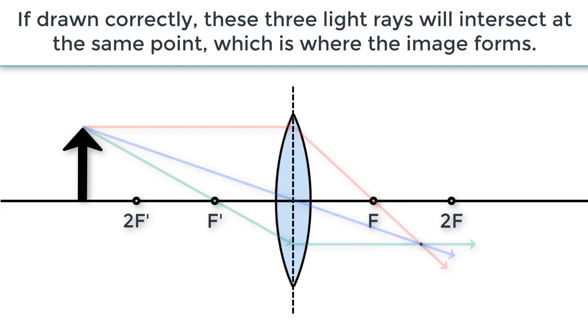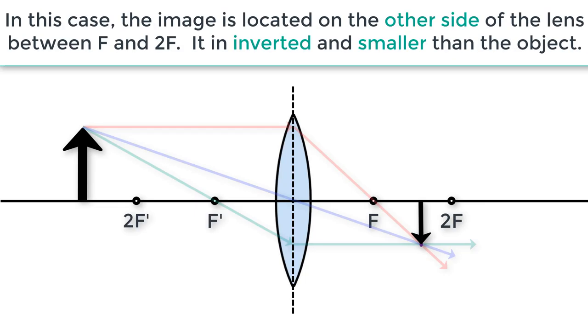If drawn correctly, these three light rays will intersect at the same point which is where the image forms. In this case, the image is located on the other side of the lens between F and 2F. It is inverted and smaller than the object.